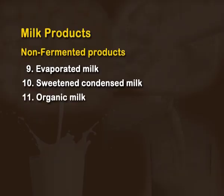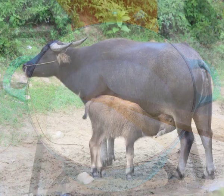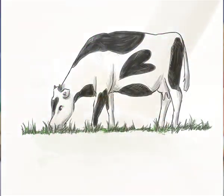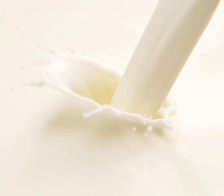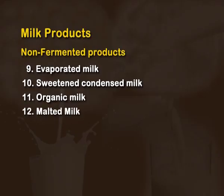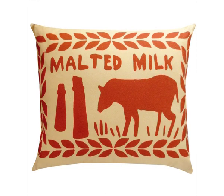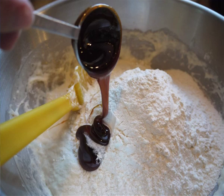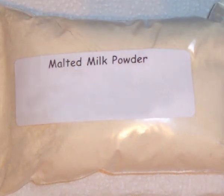Organic milk is becoming popular — it is obtained from buffaloes or cows which have grazed on pasture to which no chemical pesticides, fertilizers or agrochemicals have been added. Malted milk, also known as powdered gruel, is known commercially as products such as Horlicks, Complan, Maltova or Milo. It is a gruel made from a mixture of malted barley, wheat flour and whole milk powder which is evaporated until it forms a powder.